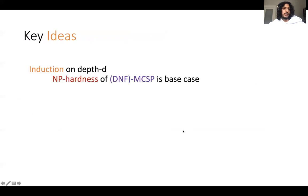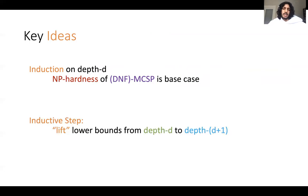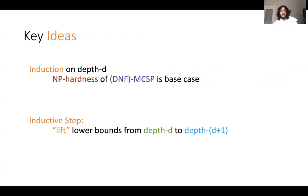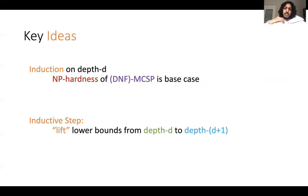The key idea behind this proof is induction. We start with the NP-hardness result for DNF MCSP, which was already known, and lift upward: depth-three MCSP is NP-hard, depth-four MCSP is NP-hard, and so on. The heart of the proof is a technique for lifting lower bounds against depth-d formulas into lower bounds against depth-d-plus-one formulas.